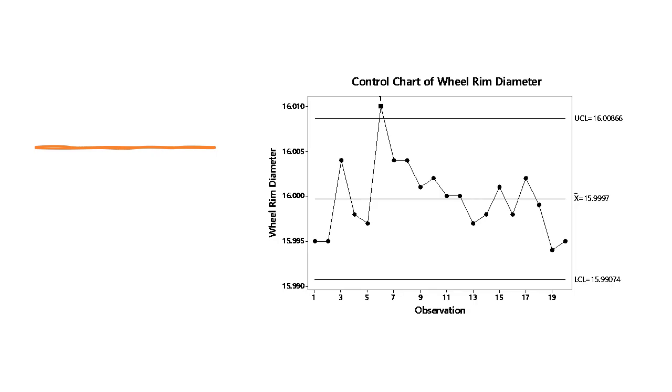A control chart will show us if the wheel manufacturing process is in or out of control. Tests for special causes identify assignable cause variation on a control chart. The most common test indicates whether any points are outside of the control limits. In Minitab, this is test number one. This chart shows that the process is out of control, meaning there is assignable cause variation in the wheel diameter. We should investigate the cause of the out-of-control point.